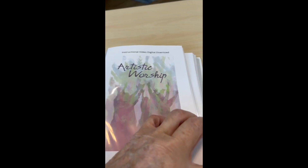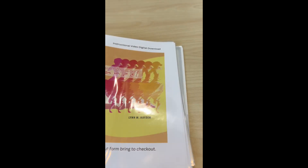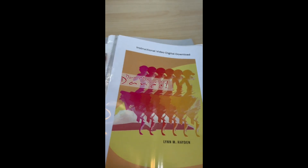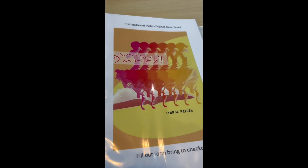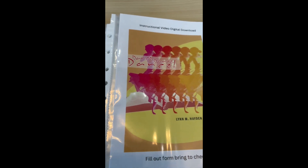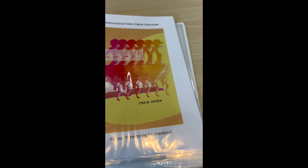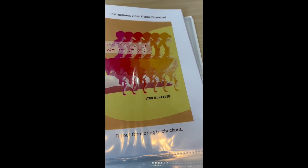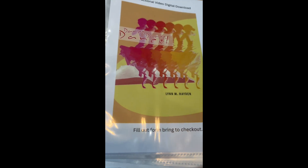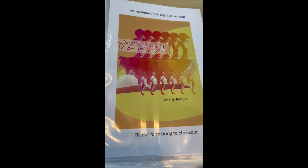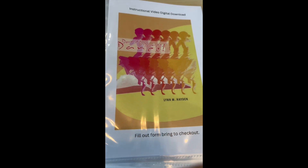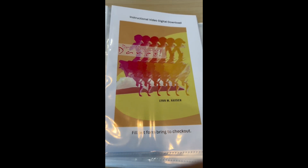You can also order these in advance on your conference information page that has your activation sheets and all that. There's a place where you can order things — it looks like a love offering but it's just an easy way to order something without paying shipping. You go to your conference information page, order whichever you want, and I can actually send you the digital download before you even get to the conference.